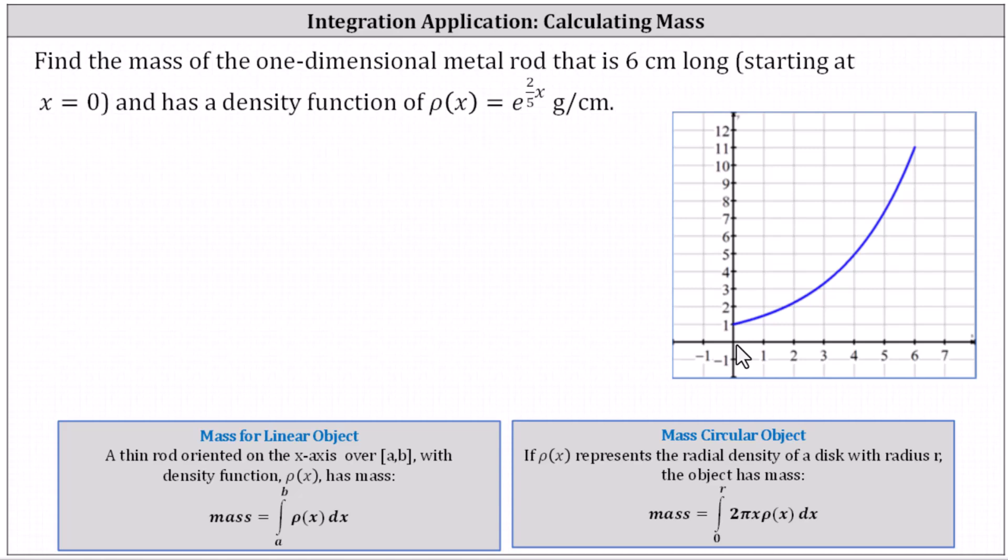Because the metal rod is six centimeters long and it starts at x equals zero, the mass m equals the definite integral from x equals zero to six of the density function which is e to the power of two fifths x.